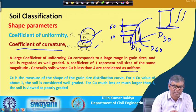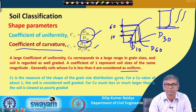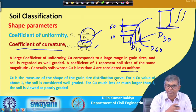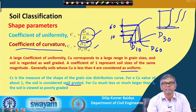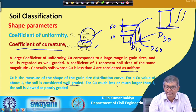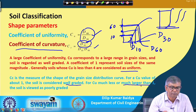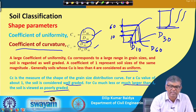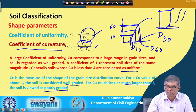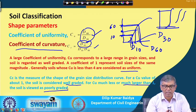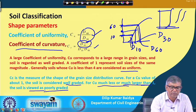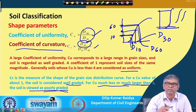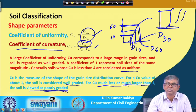Another parameter is the coefficient of curvature Cc, which is a measure of the shape of the grain size distribution curve. For a Cc value close to 1, the soil is considered well graded — the curve is a perfect S-type. For Cc much less than 1 (like 0.4 or 0.5) or much larger than 1 (like 3 or 4), the soil is viewed as poorly graded. To be well graded, Cc should be between 1 and 3.